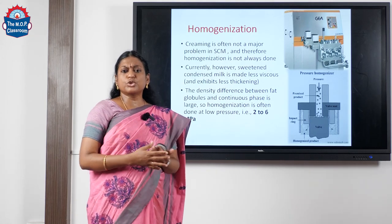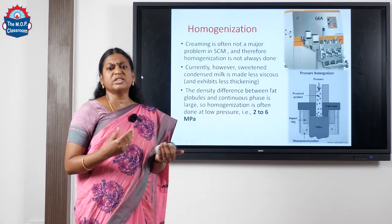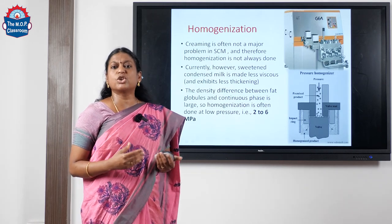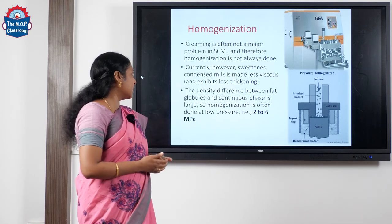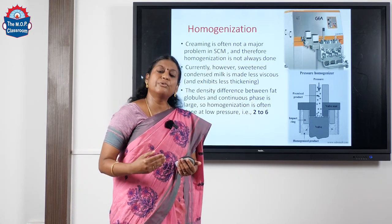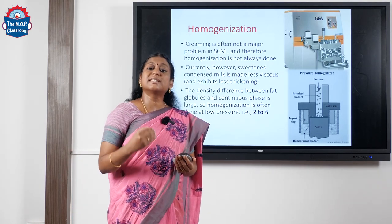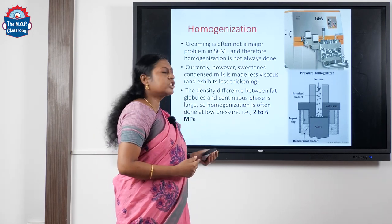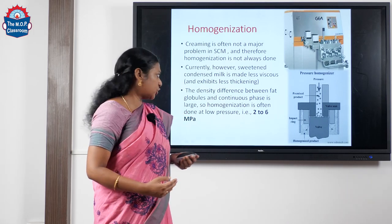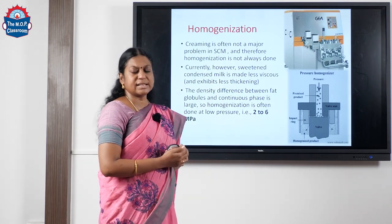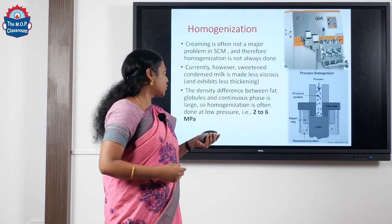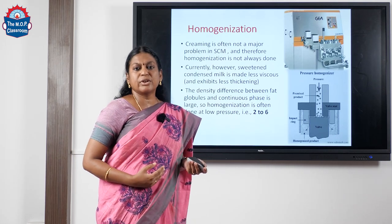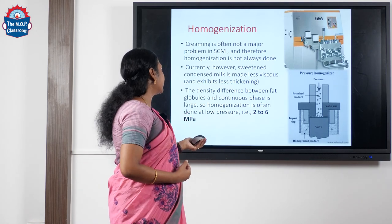Coming to homogenization: usually homogenization is not required for sweetened condensed milk because creaming is not a greater problem. But nowadays we prefer sweetened condensed milk which is less viscous, so in that case we may go in for homogenization at a lower pressure of around 2 to 6 MPa to reduce the difference in density between the fat and the continuous phase.